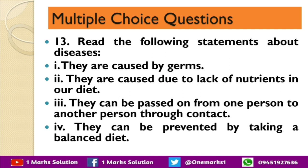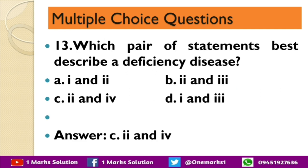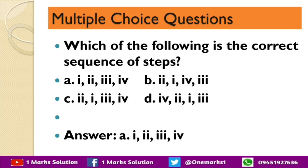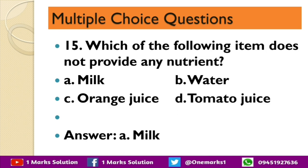The next question gives steps to test the presence of protein in a food item: Step 1 — take a small quantity of food in a test tube and add 10 drops of water, shake it; Step 2 — make a paste or powder of the food to be tested; Step 3 — add 10 drops of caustic soda solution and shake; Step 4 — add two drops of copper sulfate solution. The correct sequence is one, two, three, and four.